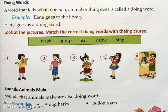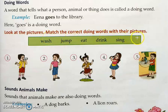For example: Ena goes to the library. Here, 'goes' is a doing word because that is the action Ena is doing. Now look at the pictures and match the correct doing words.